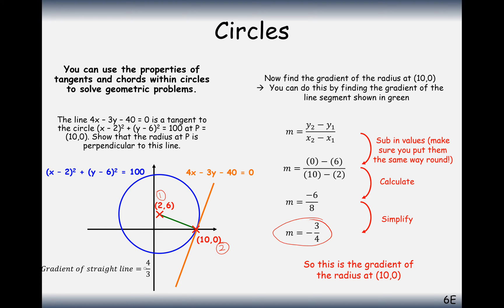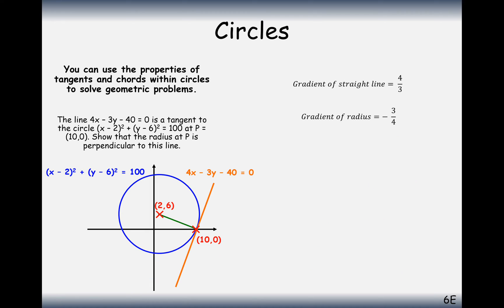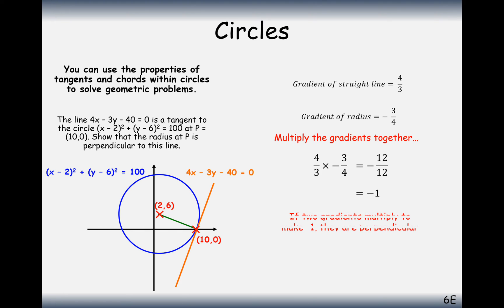So we have -3/4 and 4/3. To prove they're perpendicular, they must multiply together to make minus 1. And in this case, yes, they do. So what we can then write is a conclusion: as the gradients multiply to make minus 1, they are perpendicular lines. That's a theorem from circle theorems in GCSE, but we've proved it here with coordinate systems and equations of straight lines — the radius is perpendicular to the tangent.